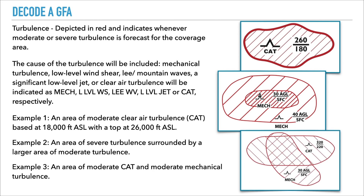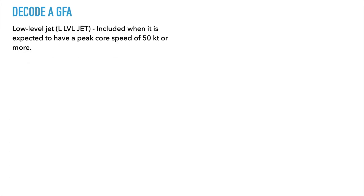In the final area we have a mixed area of turbulence: one is moderate clear air turbulence from 22,000 up to 32,000 feet, and the other area is moderate mechanical turbulence from the surface to 3,000 feet above ground level. One of the reasons for the low level turbulence is due to a low level jet.